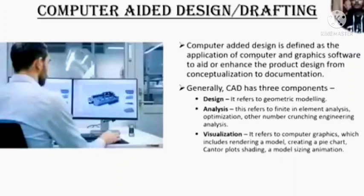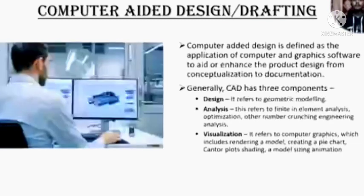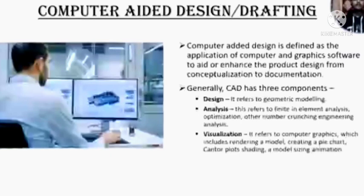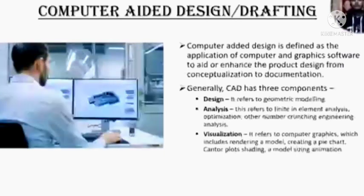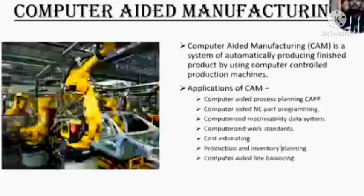Now we come to the topic of computer-aided design or drafting, CAD. Computer-aided design is defined as the application of computers and graphics software to aid or enhance the product design from conceptualization to documentation. Generally, CAD has three components: design — referring to geometric modeling; analysis — referring to finite element analysis, optimization and other engineering analysis; and visualization — referring to computer graphics which include rendering a model, creating pie charts, contour plot settings, model sizing, and animation.